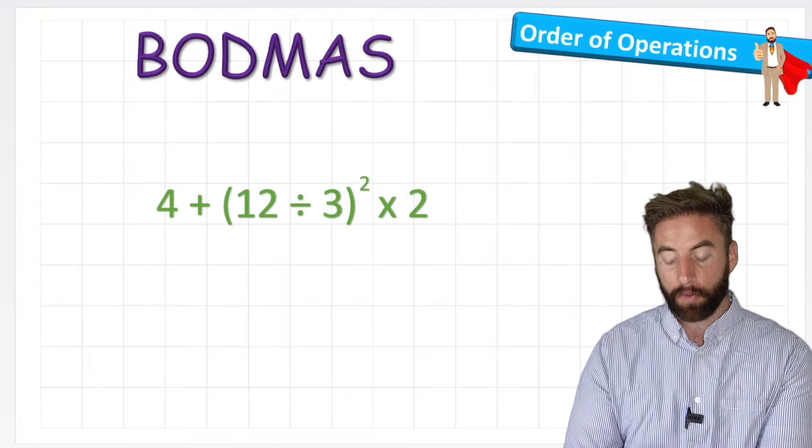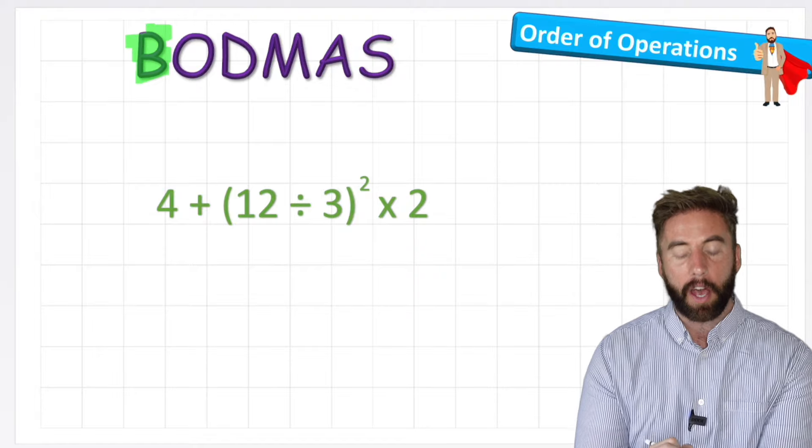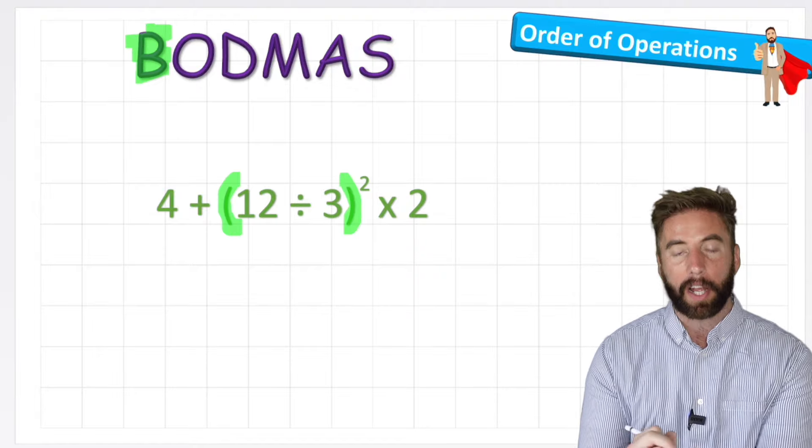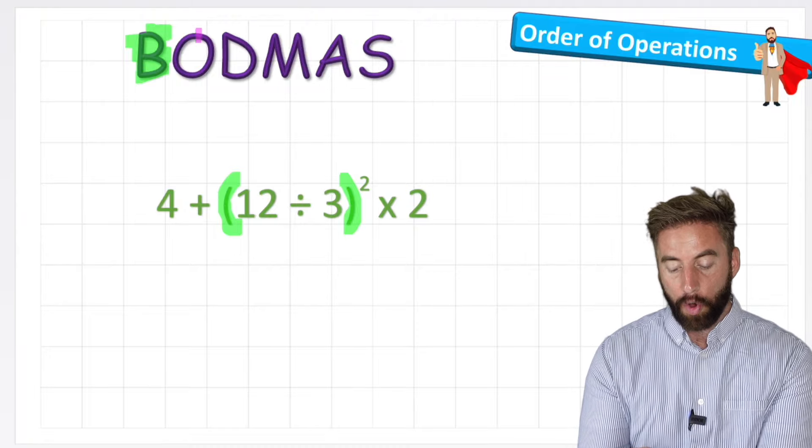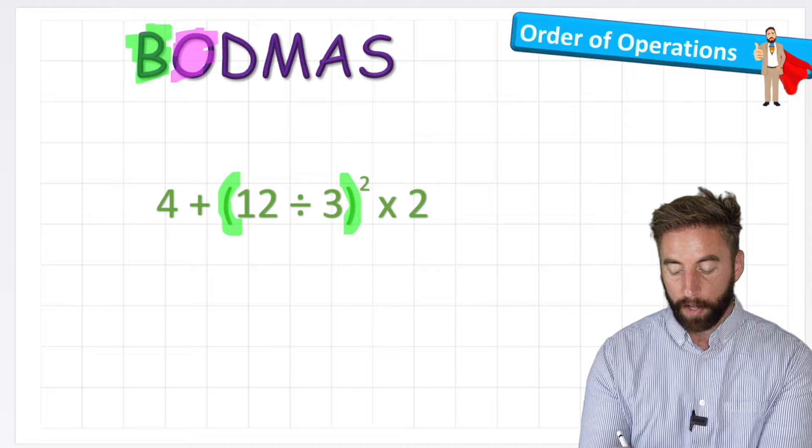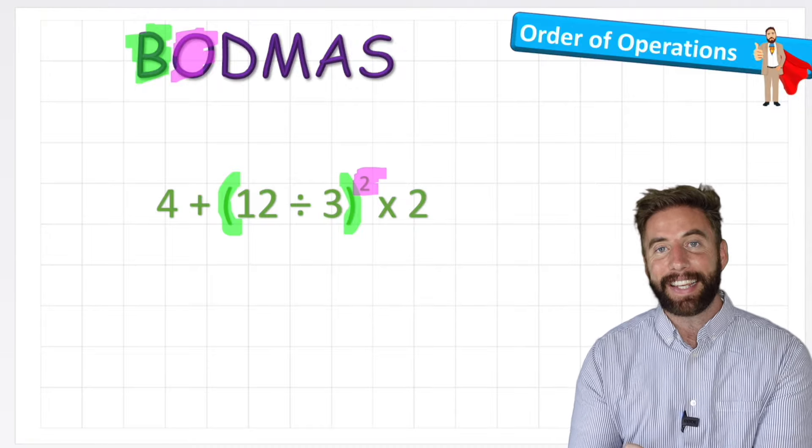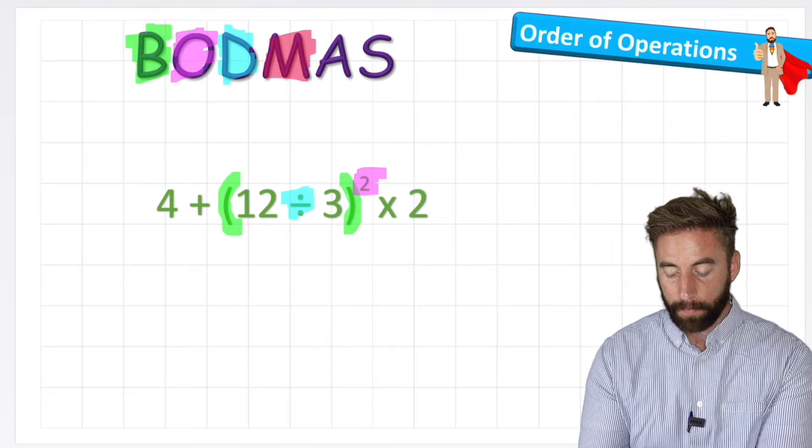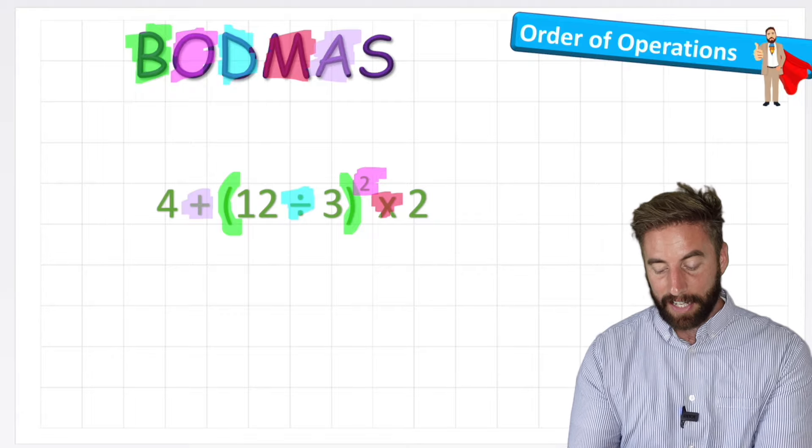So let's have a look at this question that we've got in the middle of the screen here. So our starting point would be here with the B, and our B stands for brackets. So the first thing we would have to work out in any question, if there is it, would be a bracket. Then our O stands for order, which is this little power of 2 here next to the brackets. And then the D stands for division. Our M is multiplication. Our A is addition. And our S stands for subtraction.